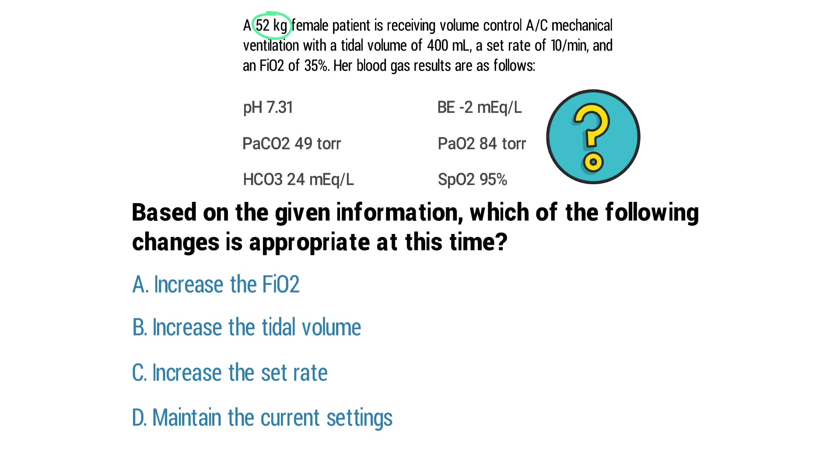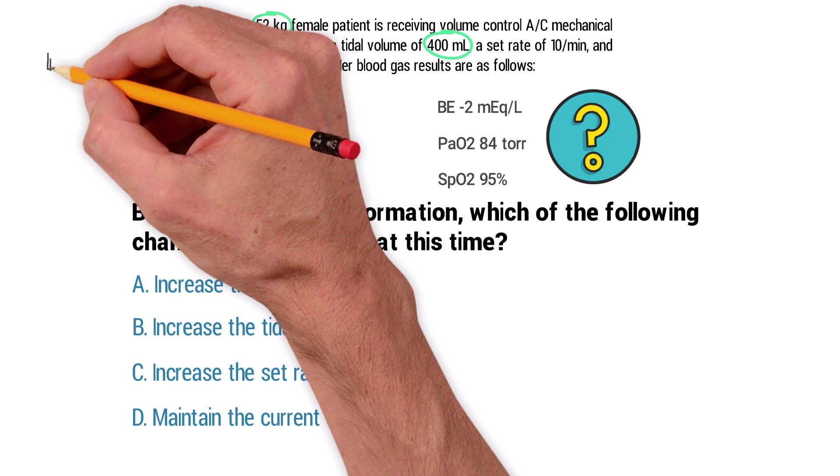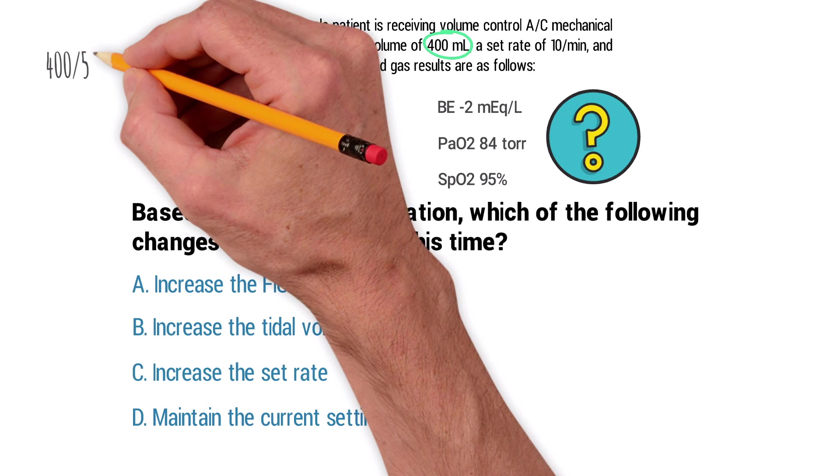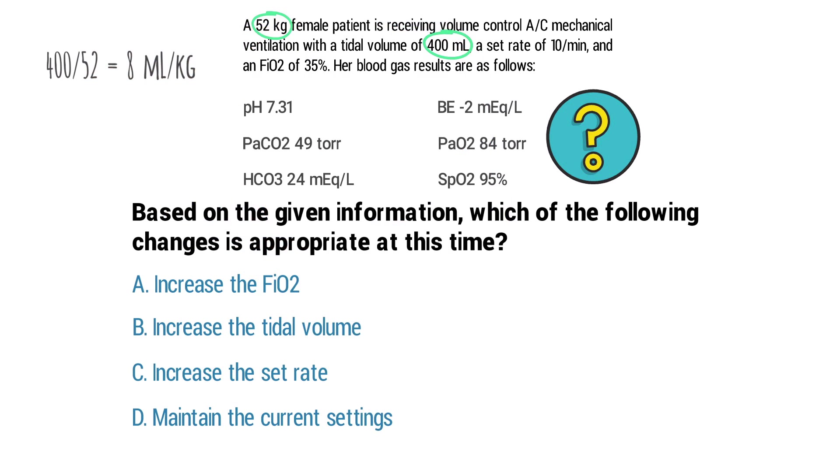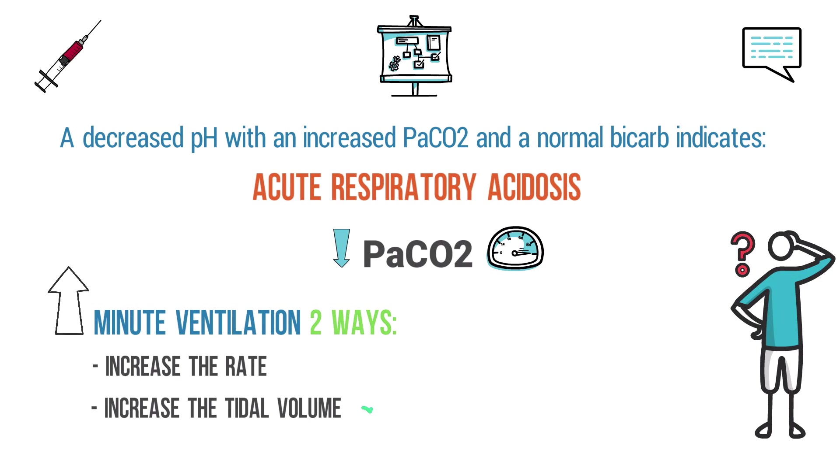Now the question provides us with the patient's weight of 52 kilograms and the set tidal volume is 400 milliliters. We can use this data to calculate whether or not the tidal volume is set appropriately. All we have to do is say 400 milliliters divided by 52 kilograms, and that equals 8 milliliters per kilogram. And this falls perfectly within the appropriate tidal volume range of 5 to 10 milliliters per kilogram, which tells us that the tidal volume is set correctly.